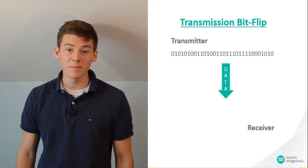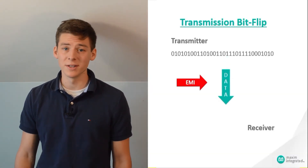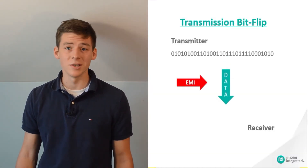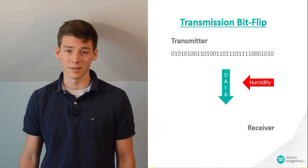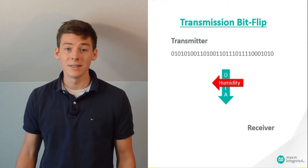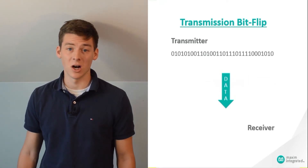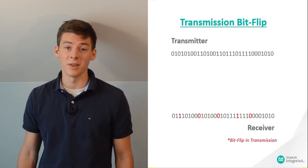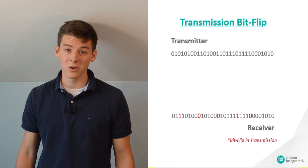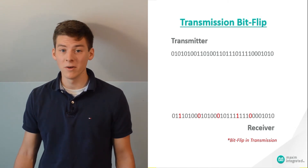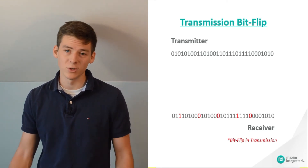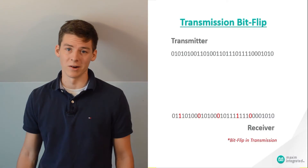Error correcting code, or ECC, is a defense mechanism for bit flips. Put simply, bit flips are just ones turning to zeros or zeros turning to ones during the transmission process. These bit flips can be costly, especially when you're dealing with things like medical, automotive, or security devices where there's absolutely no room for error.